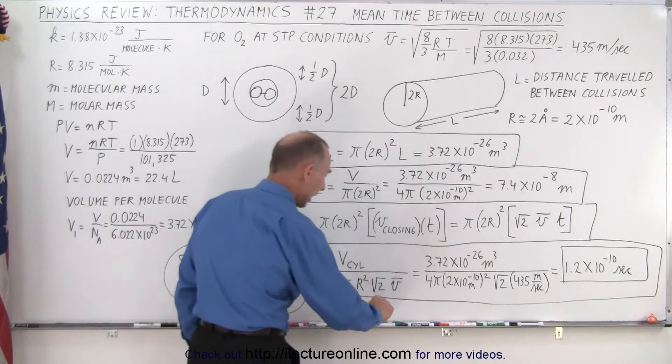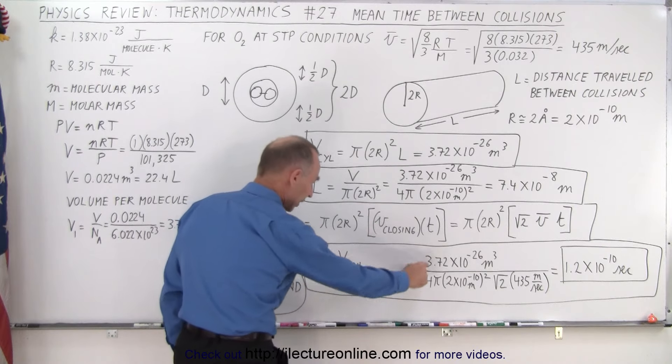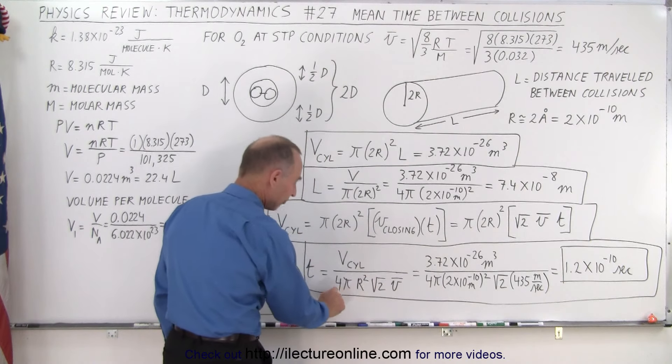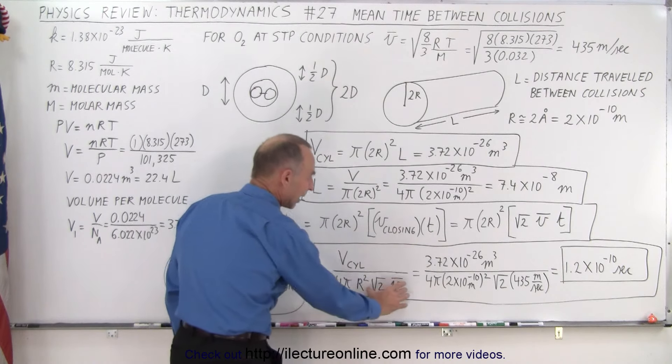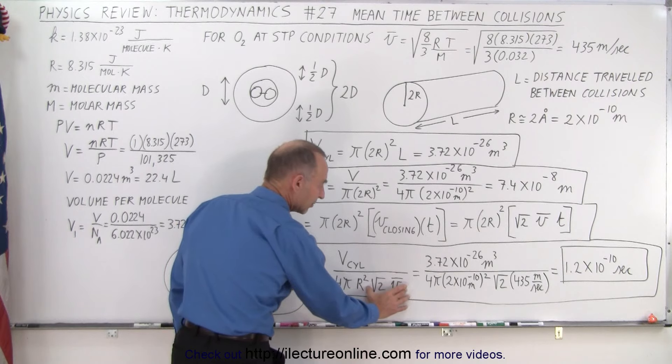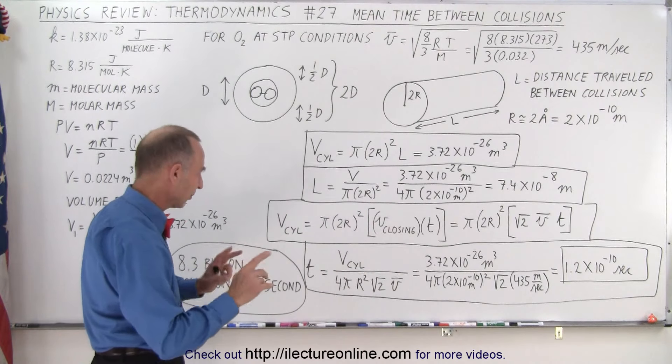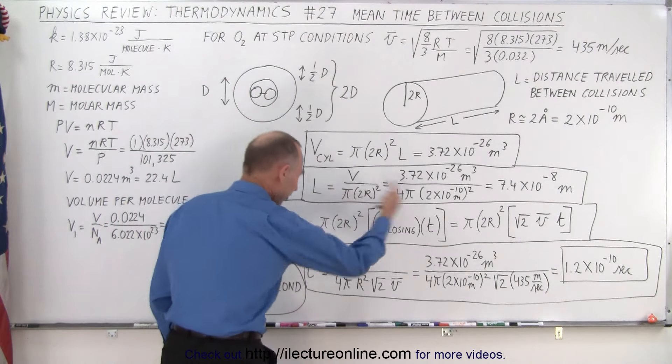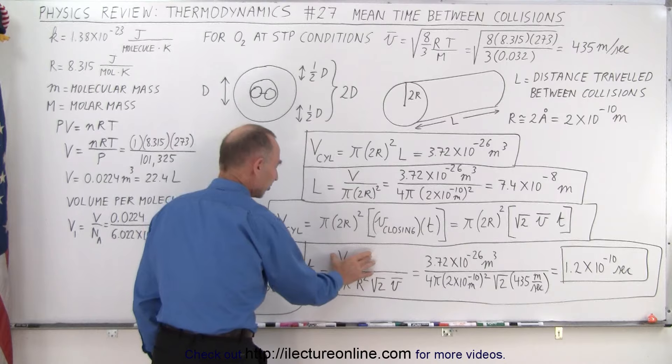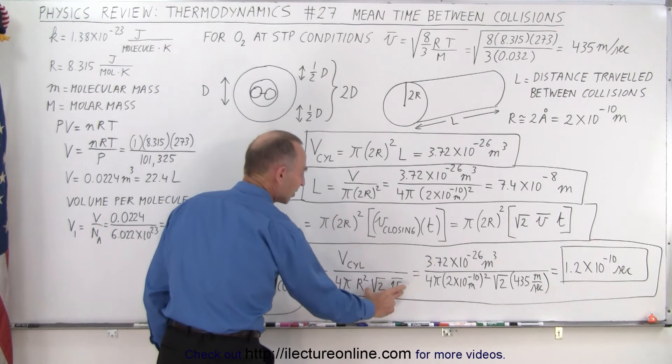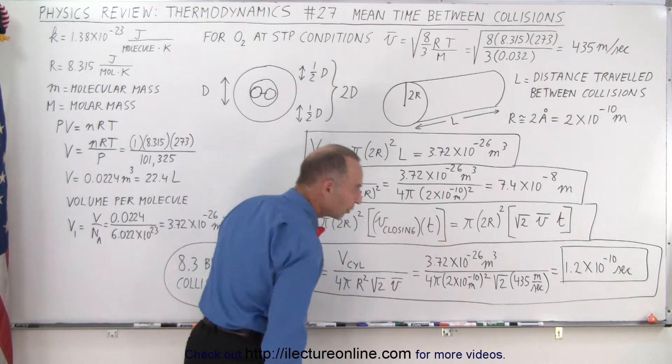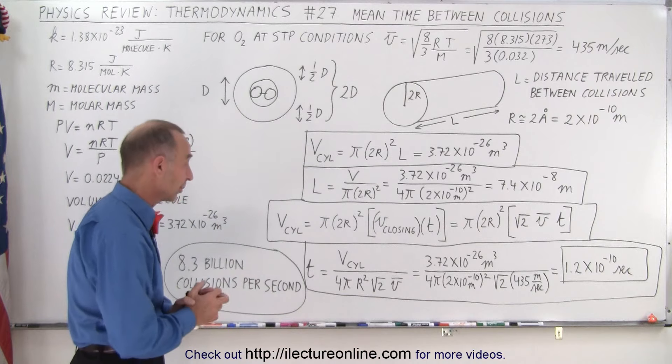And then we go ahead and take the volume divided by 4 pi r squared times the length of the cylinder. Let me back off just a little bit, because what I've done is I've taken this equation, solved it for t, take the volume of the cylinder times 4 pi r squared times the average closing velocity between two molecules. That's what I was trying to say.